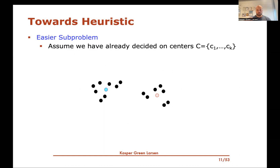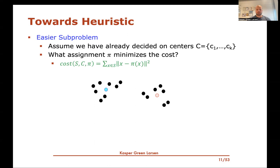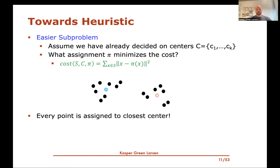Let's consider an easy sub-problem. If we've already decided what our centers should be, which assignment minimizes the cost? This question might seem trivial — and it is. Every point should be mapped to its closest center. So if I've already decided on the centers, I should of course map every single point to the nearest center. It's very easy and trivial, but we will be using this observation to build our heuristic.